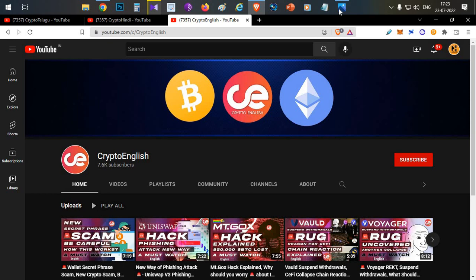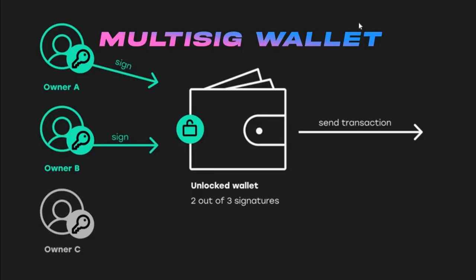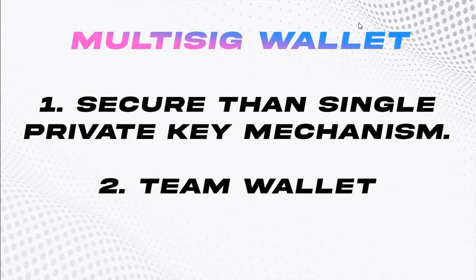First, if you are not aware of multisig wallets, I'll explain what they are. Basically, if you are using Trust Wallet or MetaMask, you can directly send funds from those wallets. But in multisig wallets, a transaction requires two or more signatures or two or more owners to approve before the transaction happens. This provides a multi-level approval system.